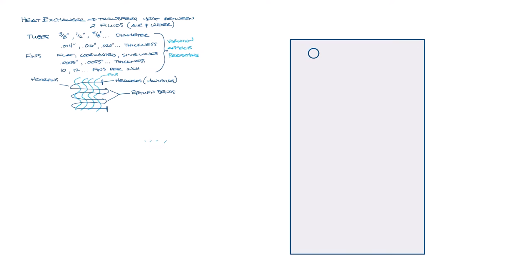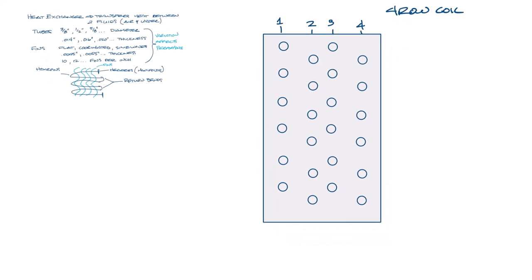So let's draw the end of a water coil and put some tubes in it like this. So let's number the rows. You can see this is a four row coil. For the height, you can see that it's six tubes high.